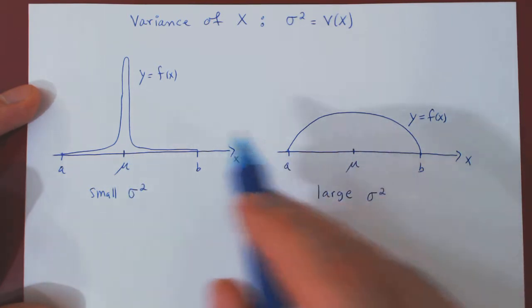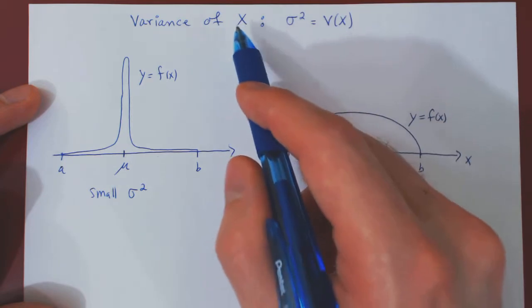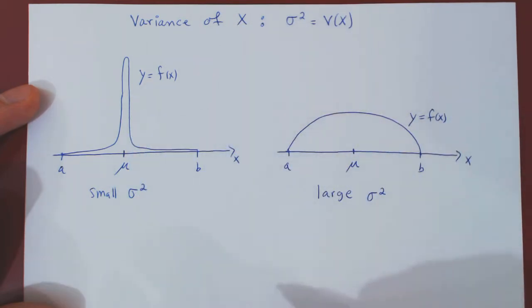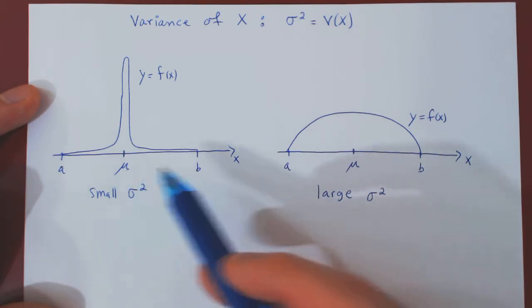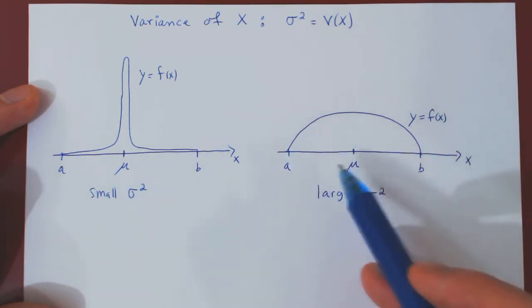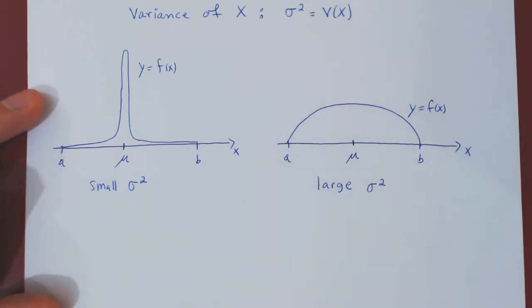So, hopefully, this makes it clear as to what the variance of a random variable will be measuring. Is most of the weight around the average value, or is there a lot of weight away from the average value? Now, how do we find the variance?